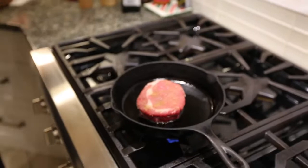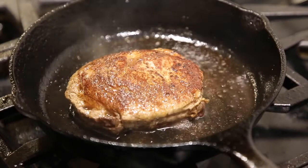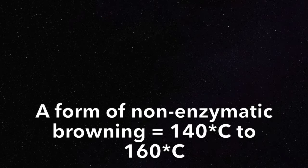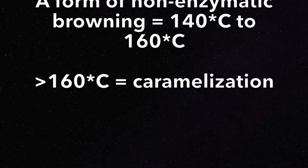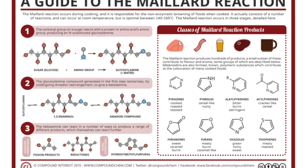Seared steaks, as well as a number of other foods such as fried dumplings, baked goods, and toasted marshmallows undergo this reaction. The reaction is a form of non-enzymatic browning, which occurs from about 140 degrees Celsius to 165 degrees Celsius. At higher temperatures, caramelization occurs. The Maillard reaction produces different organic compounds that contribute to different flavors and aromas.